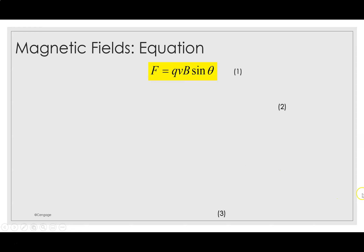Now we go to the calculation. In our discussion of electricity, the electric field at some point in space was defined as the electric force per unit charge acting on a test charge placed at that point. In a similar way, we can describe the properties of magnetic field B at some point in terms of the magnetic force exerted on a test charge at that point.